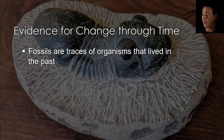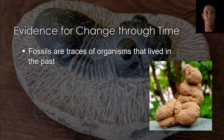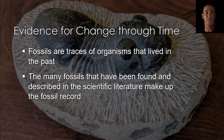When Darwin began his work, biologists and geologists had just begun to assemble and interpret the fossil record. A fossil is any trace of an organism that lived in the past. These traces range from bones and branches to shells, tracts, or impressions, and dung, or fossilized poop known as coprolites. The fossil record consists of all the fossils that have been found on earth and described in the scientific literature.